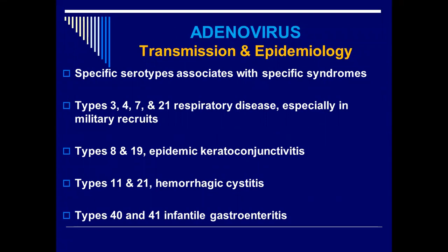Specific serotypes are associated with specific syndromes. Not every serotype causes disease in all organs. Types 3, 7, 4, and 21 are confined to respiratory diseases, especially in close-contact individuals like students in hostels and military recruits in barracks. Type 8 and 19 cause epidemic keratoconjunctivitis. Type 11 and 21 cause hemorrhagic cystitis. Type 40 and 41 cause infantile gastroenteritis.